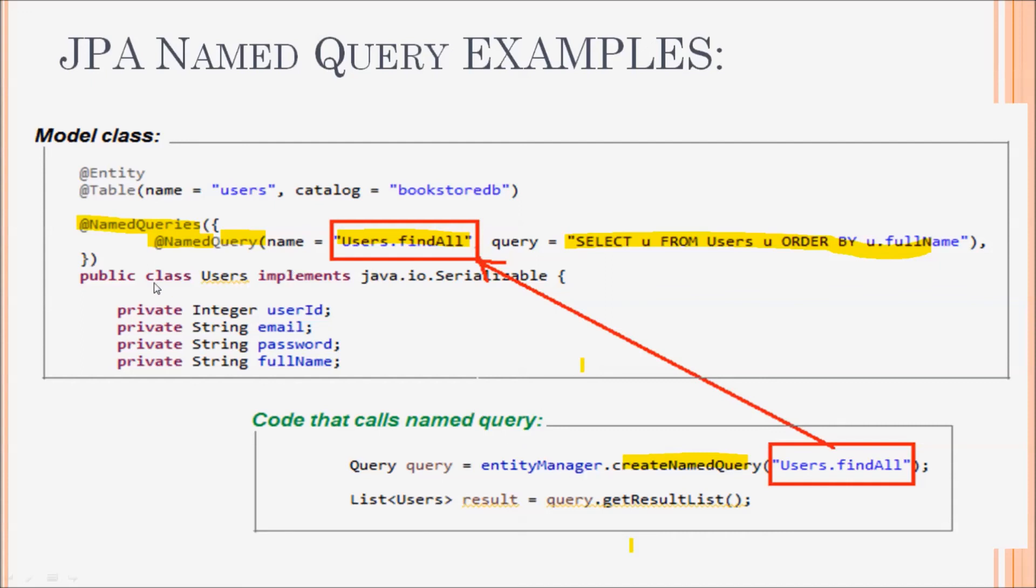As you can see, the @NamedQueries annotation allows multiple @NamedQuery to be listed here, so you can specify multiple named queries in a model class.